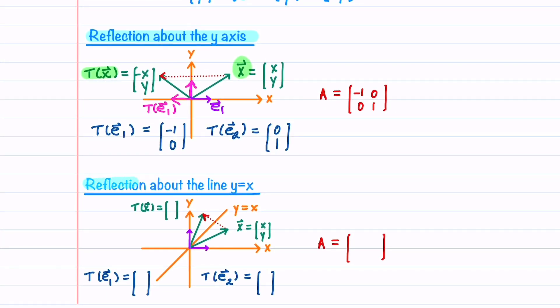When we reflect vectors about the line y equals x, our vector x becomes T of x, which is equal to (y, x) — x and y just change places. E1 becomes E2, which is (0, 1), and E2 becomes E1, which is (1, 0). Our standard matrix A is then [[0, 1], [1, 0]].